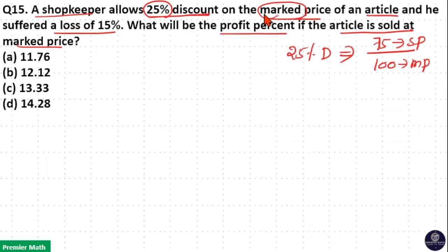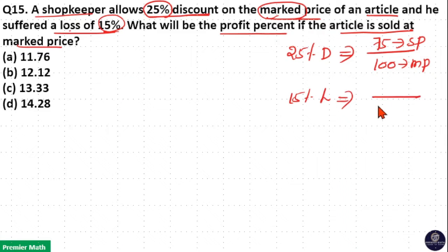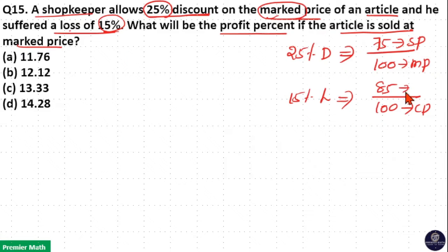And when he does that, he suffered a loss of 15%. So 15% loss means if 100 rupees is the cost price, then 100 minus 15 gives 85 rupees as the selling price.